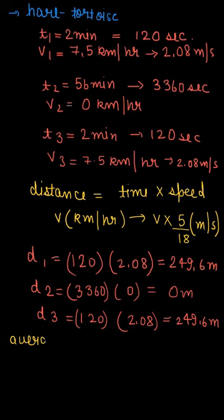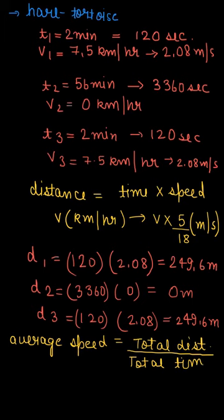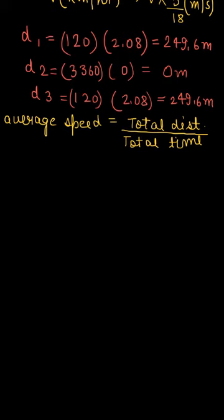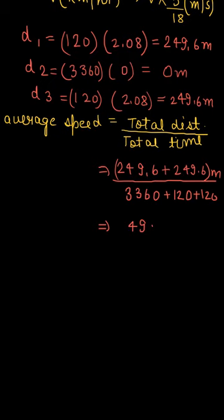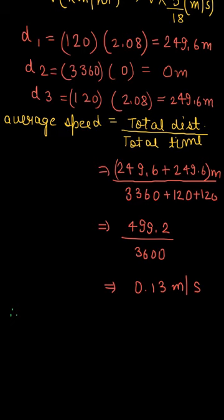Since we need to find the average speed, the formula is total distance divided by total time taken. Substituting the values: total distance equals 249.6 meters plus 249.6 meters, and total time equals 3,360 seconds plus 120 seconds plus 120 seconds. This gives 499.2 meters divided by 3,600 seconds, so the average speed equals 0.13 meter per second.